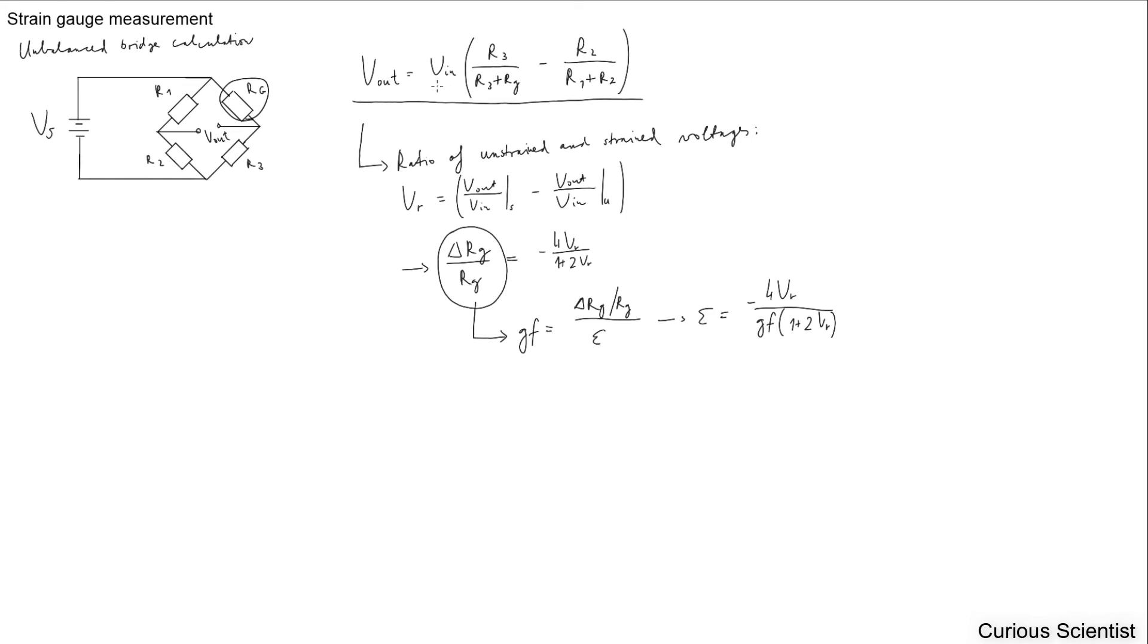I showed the same exact formula in the previous slide. What we have to do now is introduce a new variable, which is the ratio of the unstrained and strained voltages. We use Vr as the name of the variable. Here we use the ratios: Vout divided by V in when it is strained minus Vout divided by V in when it is unstrained.